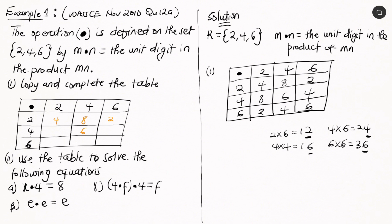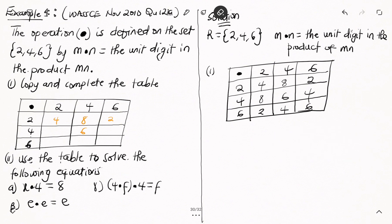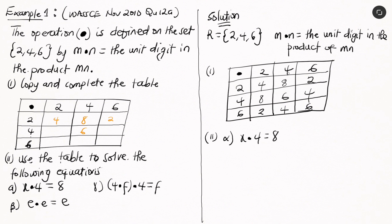Now that we've completed the table, let's look at part (ii). Part (α) says x ⊙ 4 = 8. Looking at the table, which number operation 4 gives 8? From the table, 2 ⊙ 4 = 8. So x = 2.